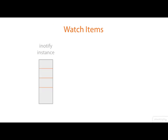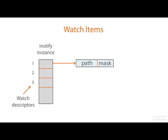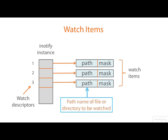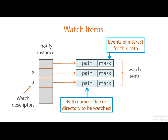This slide just brings everything together. We create an iNotify instance and add watches to it. They're identified by descriptors — one, two, three, and so on. Each watch specifies a path and a mask, so these things are known as the watch items. The path specifies the name of the directory or file that you're watching, and the mask specifies which events are of interest for this path.